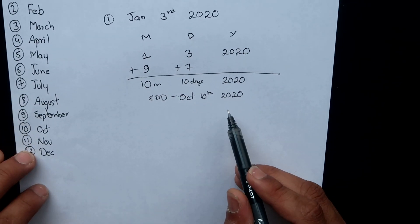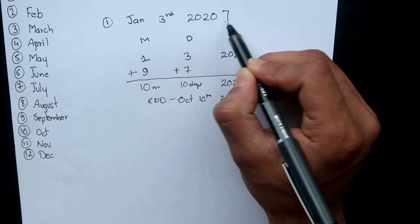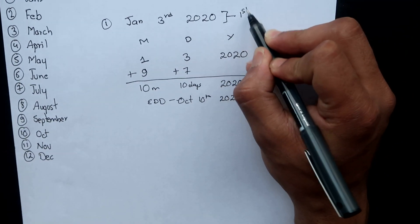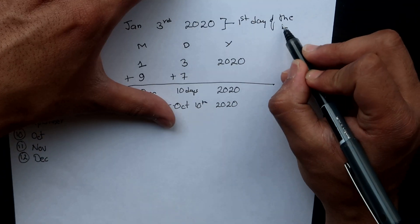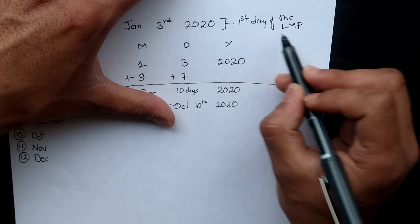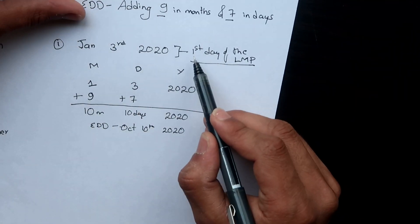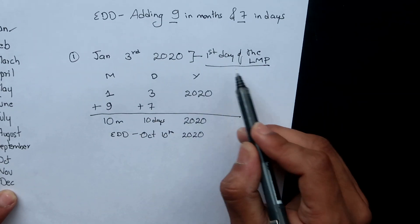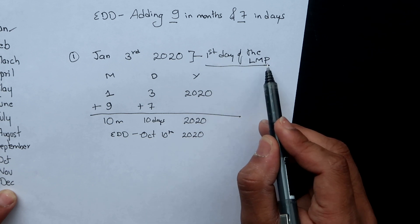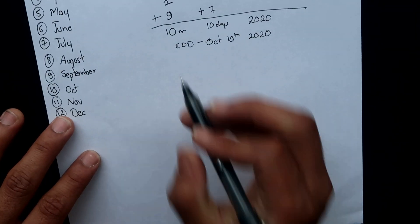I should mention that the date I'm using here is the first day of the last menstrual period. You need to know the first day of the last menstrual period — the first day is used because that is the day women usually remember. So you need to have your first day of the last menstrual period date remembered.